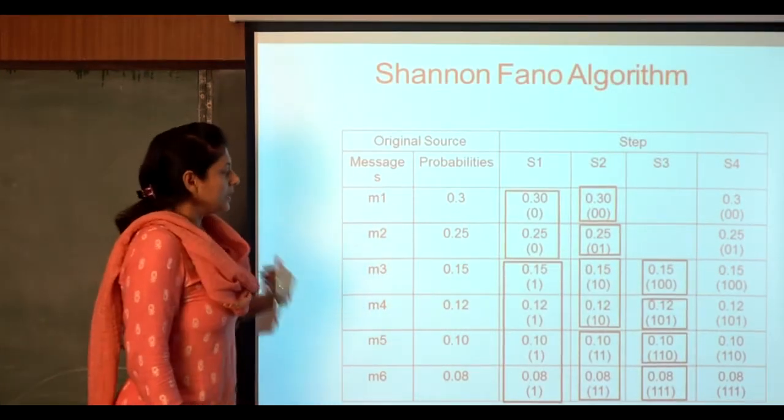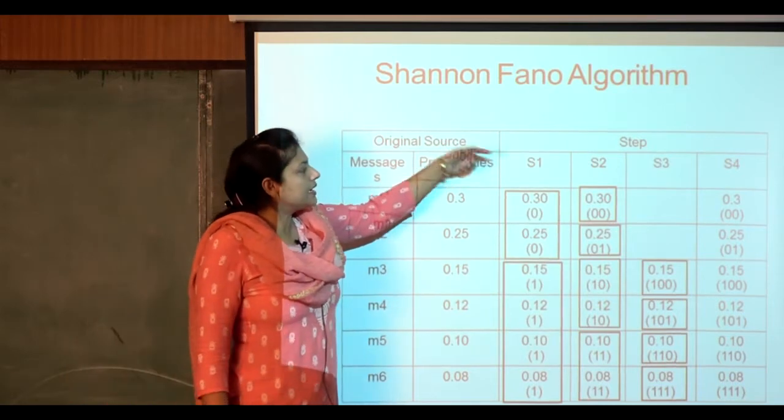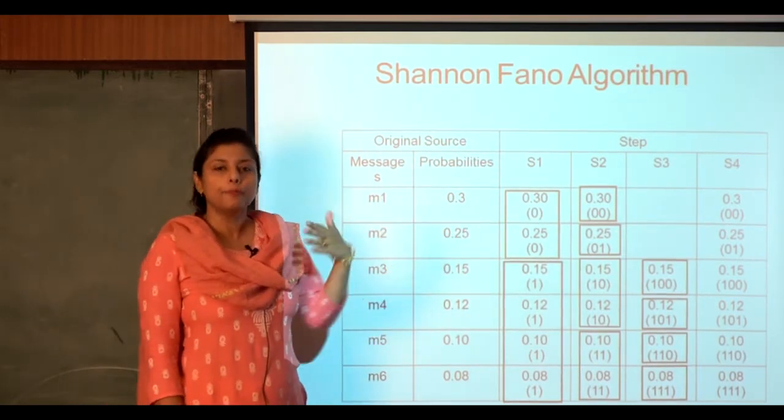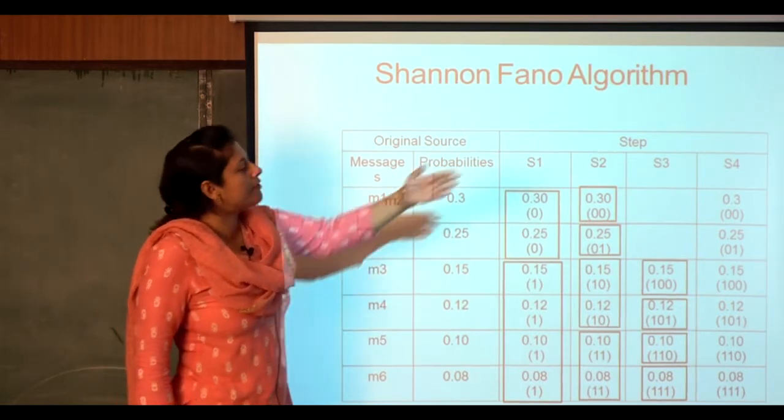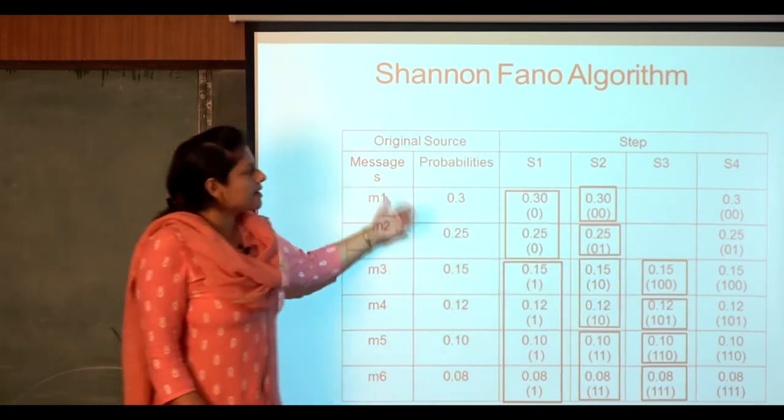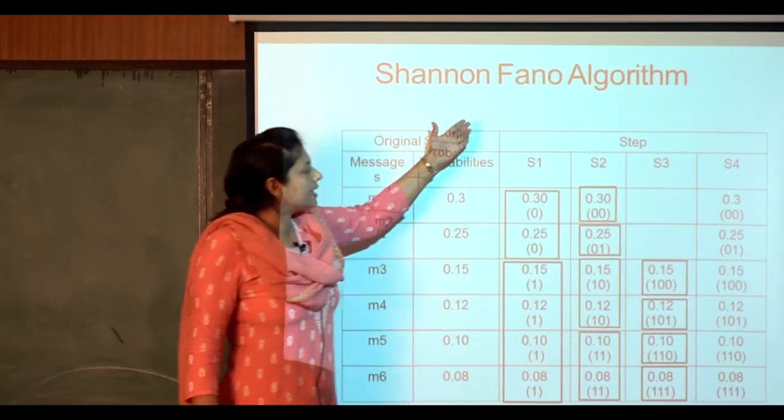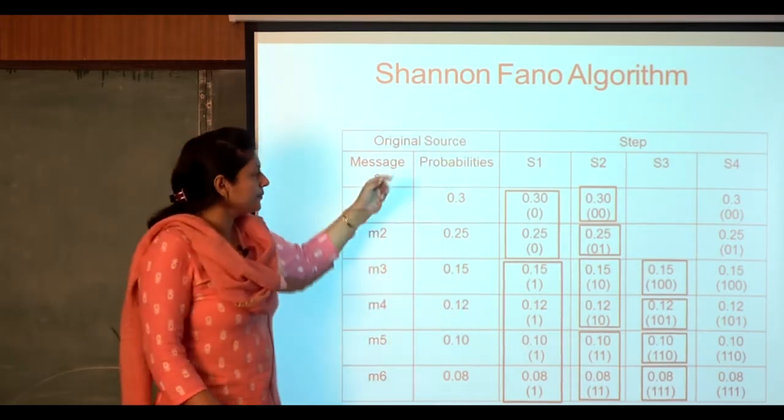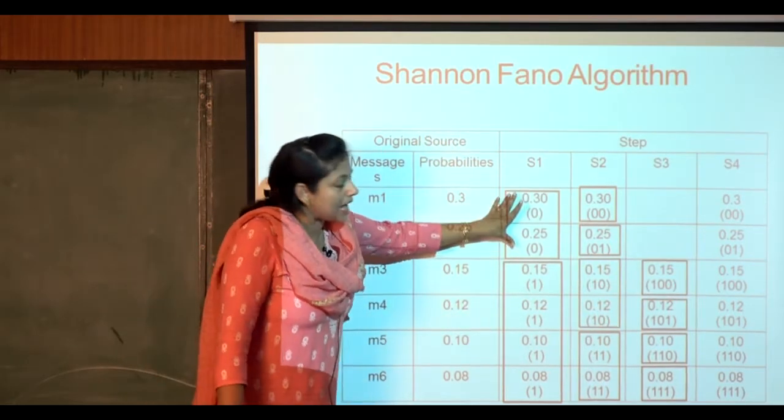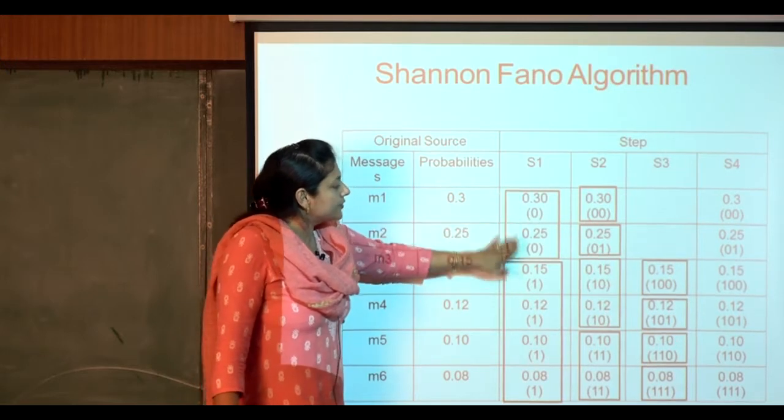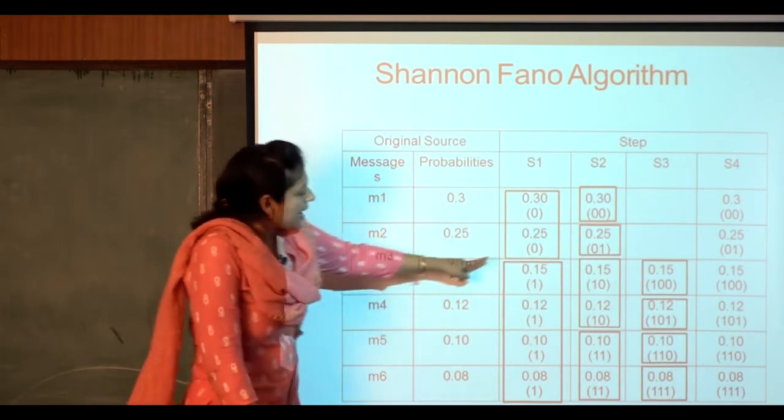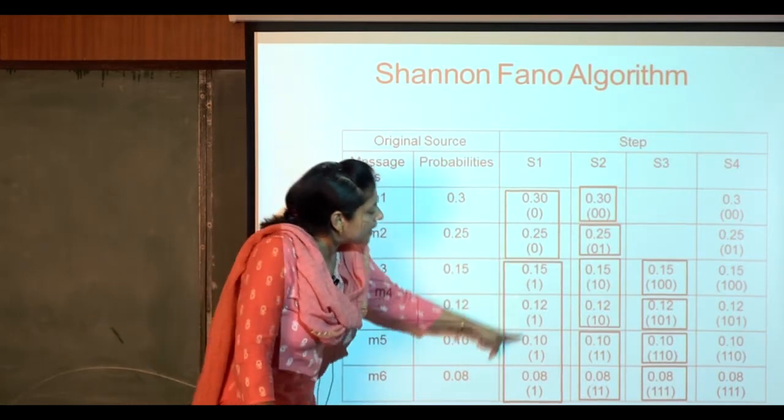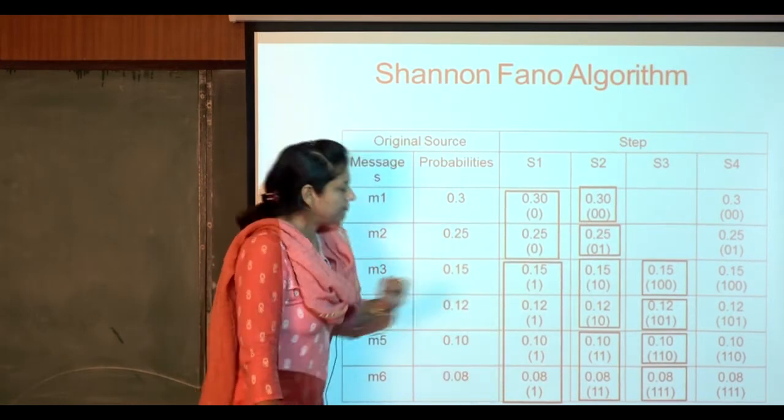Now we start encoding the Shannon-Fano algorithm. This is different from Huffman coding—in Huffman coding we started encoding from the S4 stage, but in Shannon-Fano we start from the S1 stage. The upper part consists of 0.3 and 0.25, so we encode them with 0. The lower part we encode with 1.